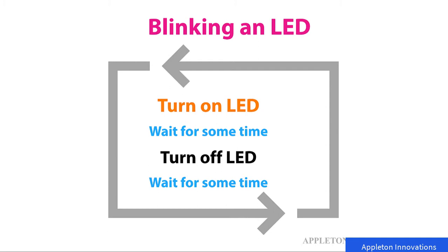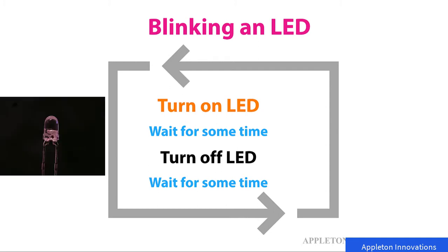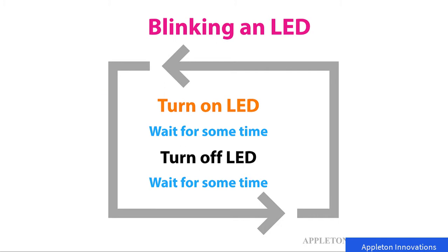What is blinking an LED? Blinking an LED is very simple — we already seen this in Arduino. Blinking an LED means turning on the LED, waiting for some time, then turning off the LED, waiting for some time, and continuing. So it should run inside a loop: turn on LED, wait, turn off LED, wait, and continue. This is blinking an LED.